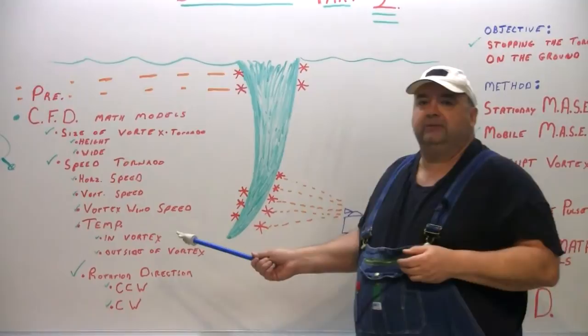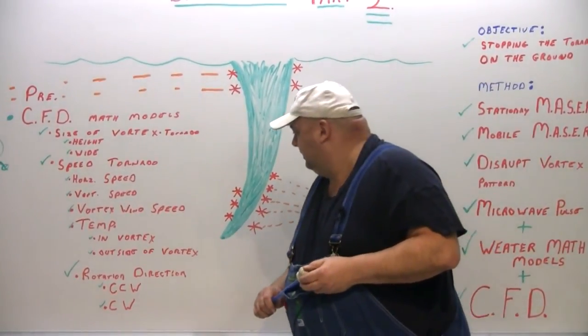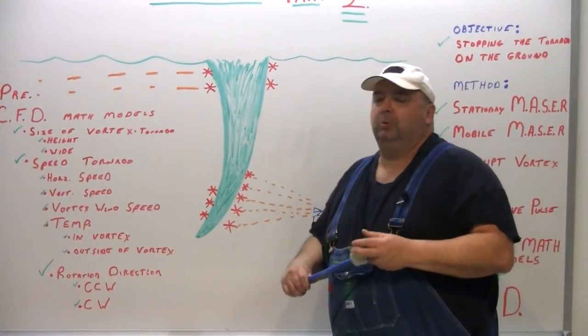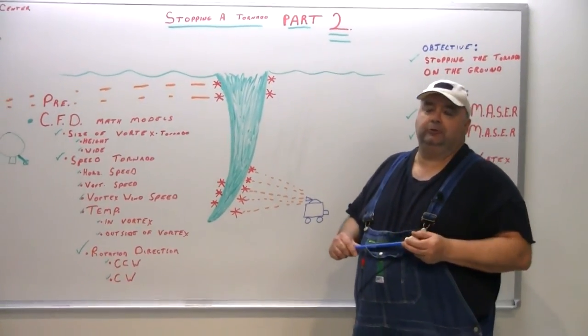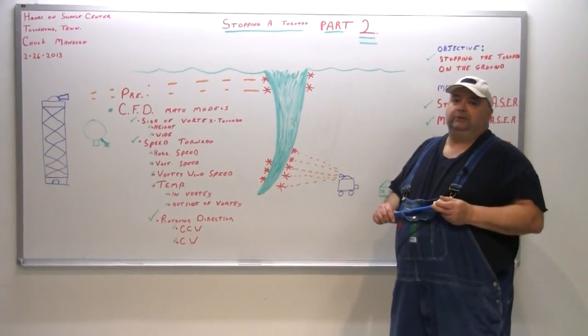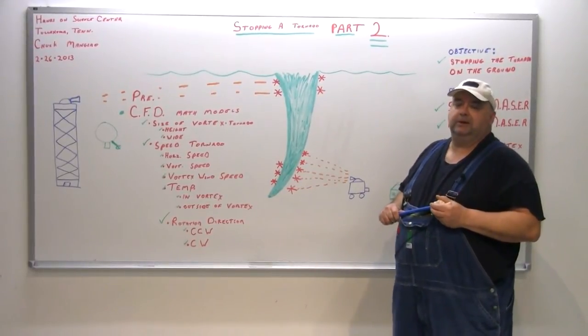The temperature inside the vortex and outside, and the rotation direction. This is very important, because mostly in North America, it goes counterclockwise. Sometimes it goes clockwise, and that's another story on itself. So we've got to determine that right from the beginning.